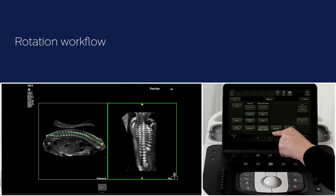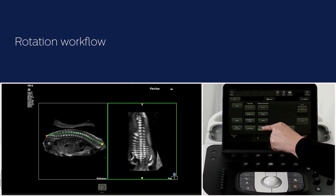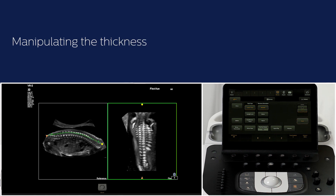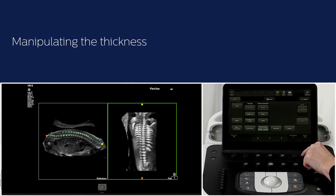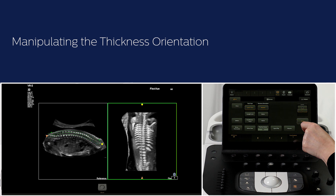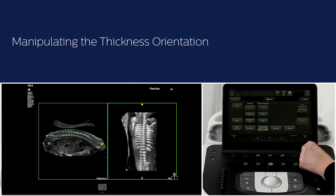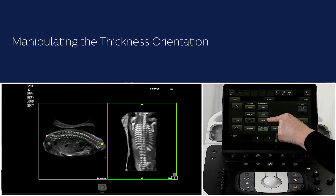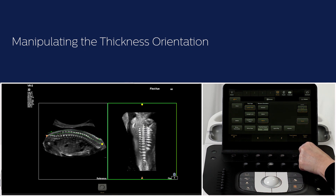You can rotate the FlexView image by pressing rotate on the touchscreen. You can manipulate the FlexView trace by changing the thickness — turn this rotary knob and see the change in the solid line. If you choose bilateral in the thickness orientation, the dotted lines on both sides of the solid line will move away or closer. Choose below in the thickness orientation menu and you will notice the dotted line only below the solid line. Choose above and you will notice the dotted line above the solid trace line.